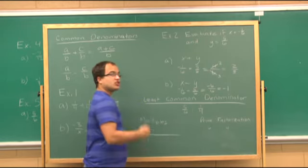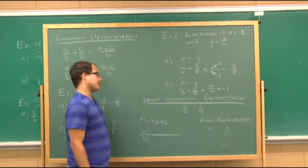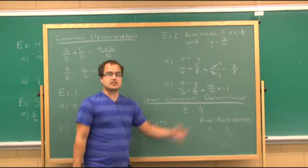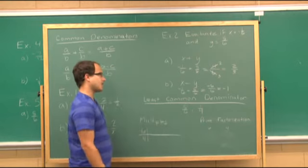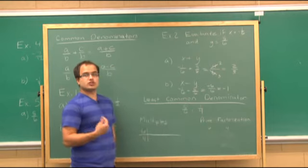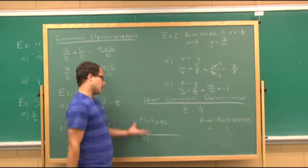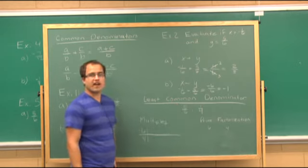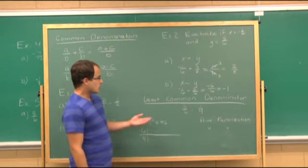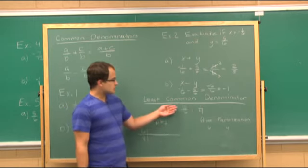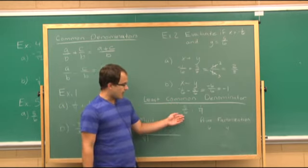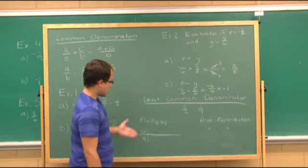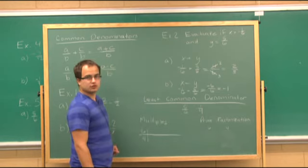Now, if they don't have common denominators, we have to find the least common denominator. There are two ways to do that: we can either use multiples or prime factorization. So, to find the least common denominator of 5/6 and 1/4, I'll show you the multiples way.